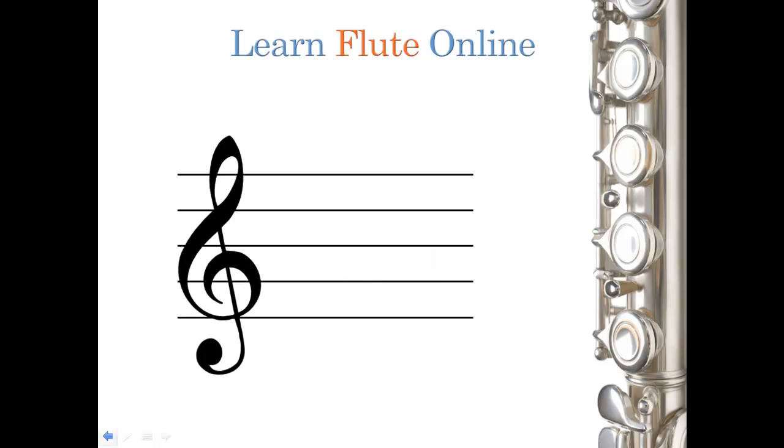We also know that the treble clef sits on the left side at the beginning of each line of music staff. The musical staff is comprised of five straight lines. Any note placed directly on the middle line is given the name B, and has the pitch also named B.